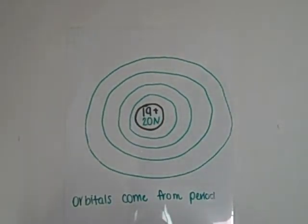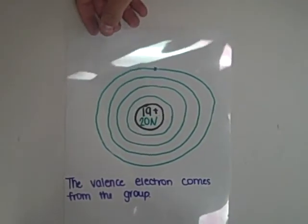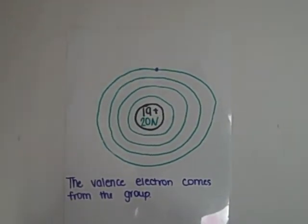The orbitals around the circle come from the period that it's in. The valence electrons come from the group that it's in.